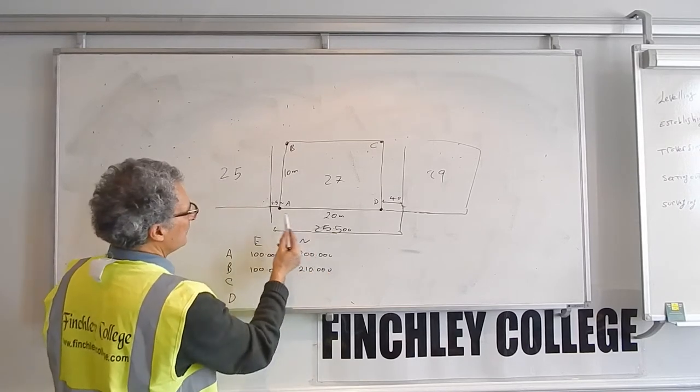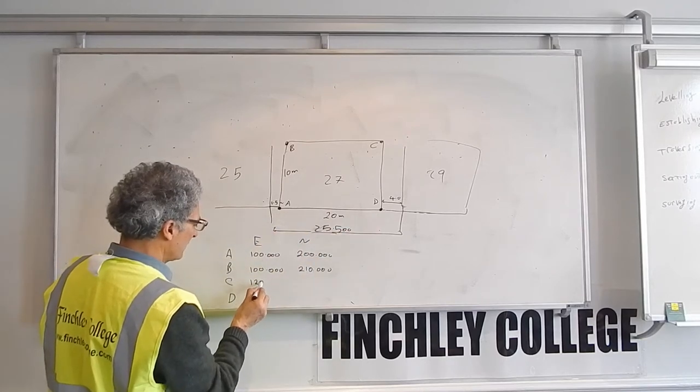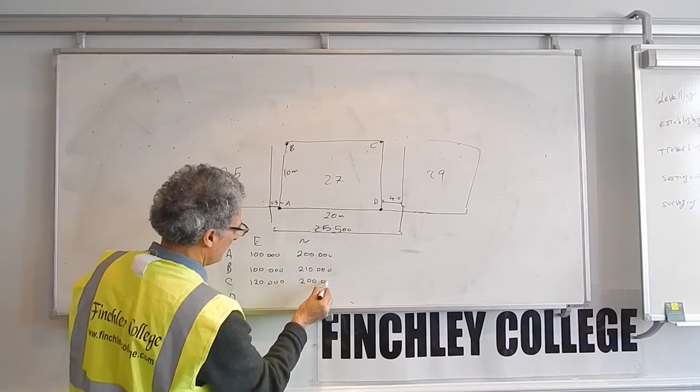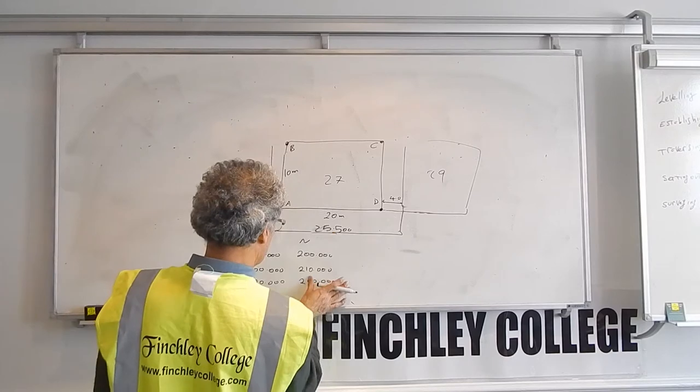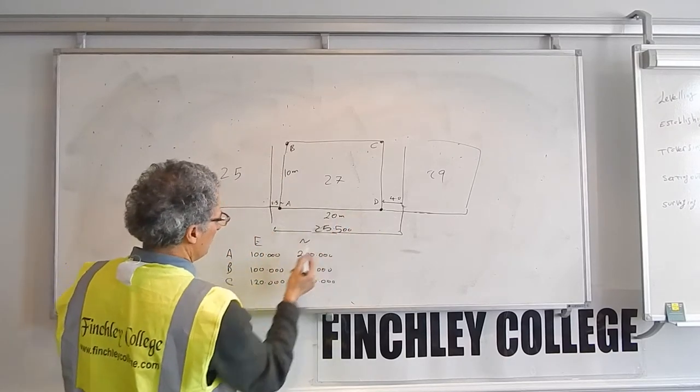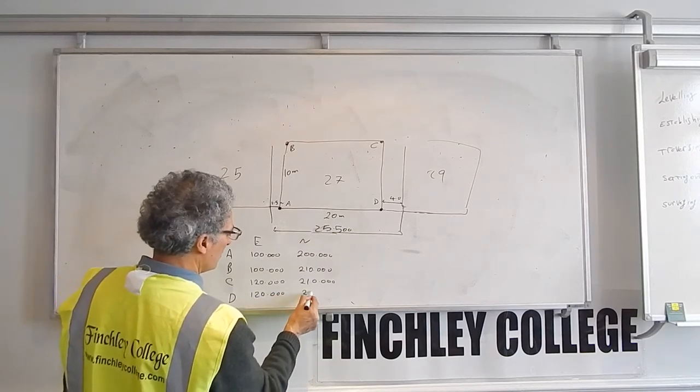C would be easting of 100 plus 20, would be 120 meters, and northing would be 210. And D will be 120 and the northing 200.